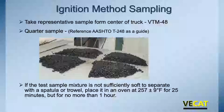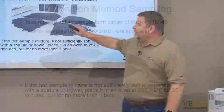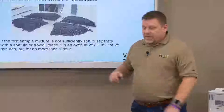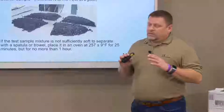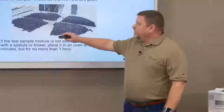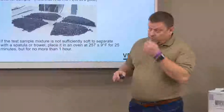First, we take a representative sample per VTM 48, taken from the center of the truckload — you need a minimum of 10 pounds of material. Once you've brought that 10 pounds in, you want to do the quartering method to get a proper representative sample for testing. A lot of times people just scoop through it and put half a scoop in each basket, but that can segregate the material. We need to quarter down properly before loading baskets rather than just scooping it up.